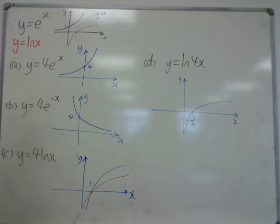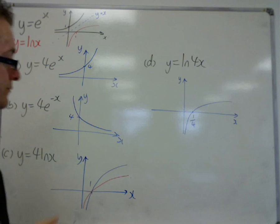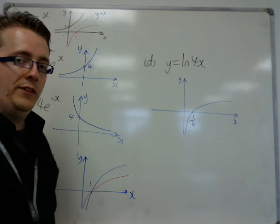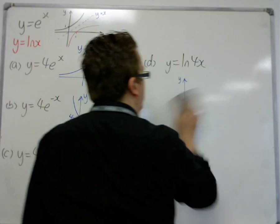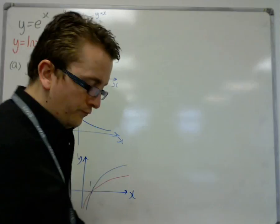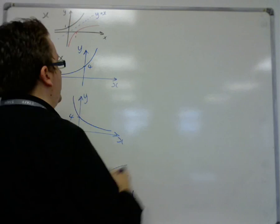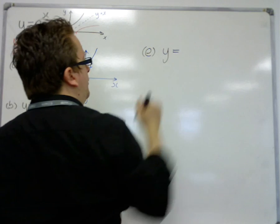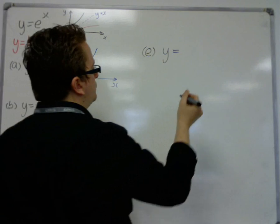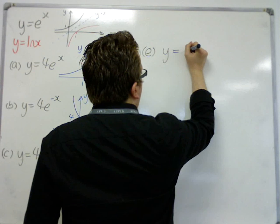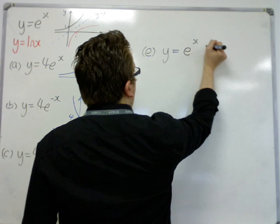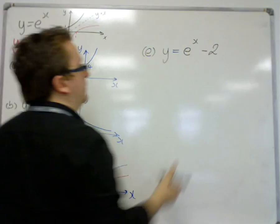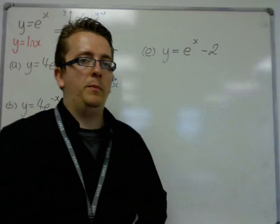So, they're the four that I really wanted to show. I might as well do a translation while I'm here. So, if I look at e, and let's say I'm looking at y is equal to, let's look at e to the x minus 2, okay. y is equal to e to the x minus 2.